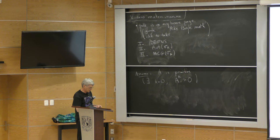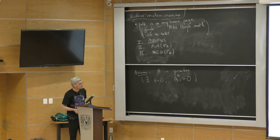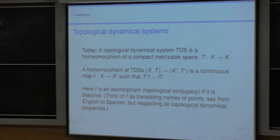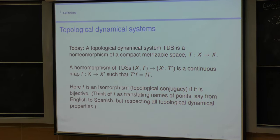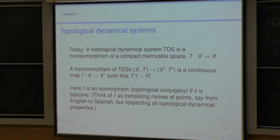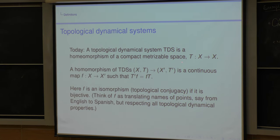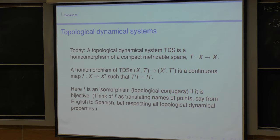Without further ado, let's go. So, first: topological dynamical systems. This is a point of view on what we're doing. The topological dynamical system today is a homeomorphism of a compact metrizable space, T taking X to X. A homeomorphism of two topological dynamical systems is a continuous map from X to X-prime such that the map intertwines the actions. We can draw a commuting diagram to express that.